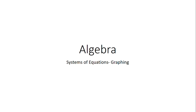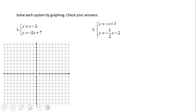Welcome, or welcome back, on C-Square. In this video clip we're going to talk about solving systems of equations by graphing. We have two problems here. The first one says y equals x minus 2, that is the first equation of the system, and the second one is y equals negative 2x plus 7.